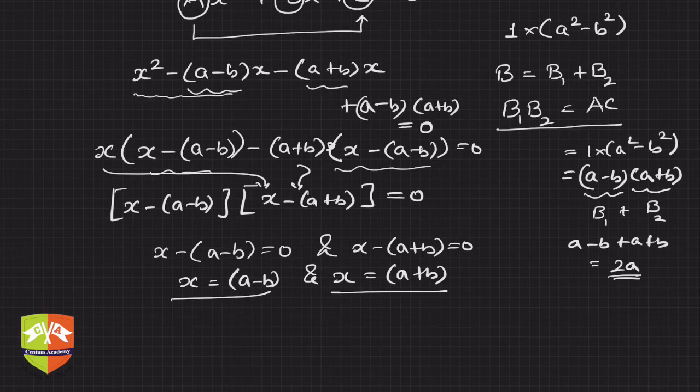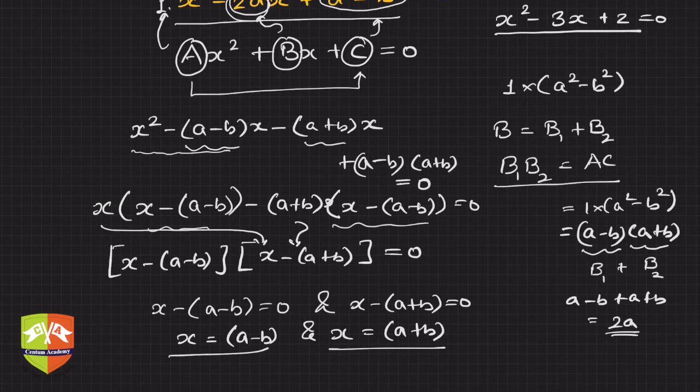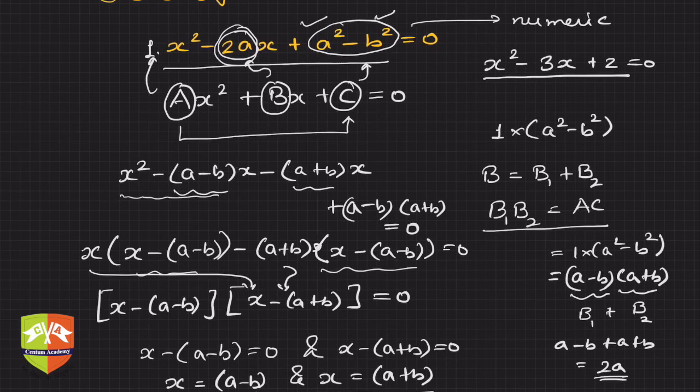So if the coefficients are non-numeric, then you have to use the concepts of algebra to factorize the AC term. The usual method of splitting the middle term should be used to solve the equation.